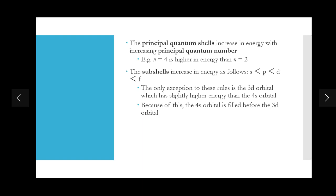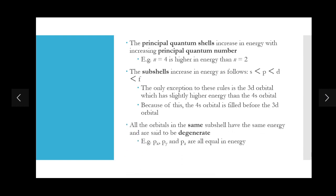All orbitals in the same subshell have the same energy and are said to be degenerate. For example, the 2p subshell has three orbitals — px, py, and pz — and these all have the same energy. Likewise, the d subshell contains five orbitals and the f subshell contains seven orbitals; all orbitals within their respective subshell are equal in energy and are said to be degenerate.